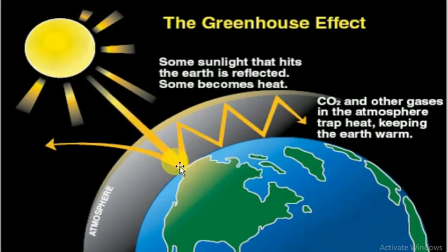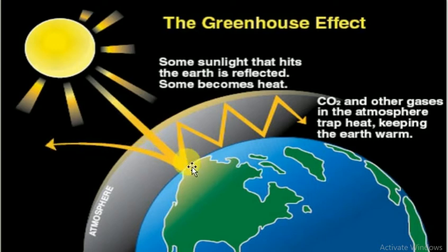When the sun's energy reaches the earth's atmosphere, some of it is reflected back to space and the rest is absorbed and then re-radiated by the greenhouse gases in the earth's atmosphere. The absorbed energy warms the atmosphere and the surface of earth.